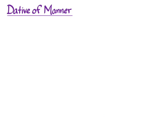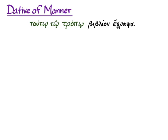Let's move on to dative of manner. With some nouns that can answer the question 'how' or 'in what manner,' you can use the dative case without a preposition. This chapter gives us a couple of nouns that we can do that with: tropos and sigē. Our first example is touto tō tropō biblion egrapsa — 'in this way, I wrote a book.' There we've got tropos in the dative case modified by the demonstrative adjective, and it tells you in what manner I wrote a book.